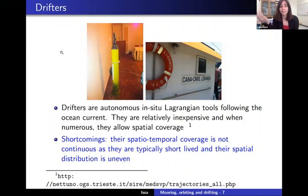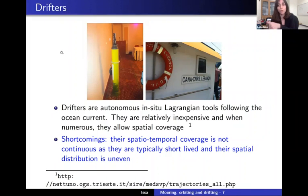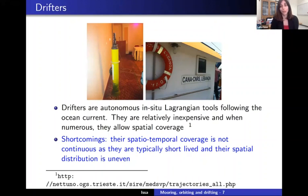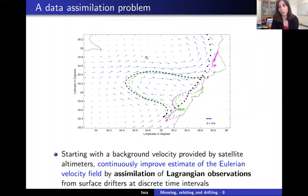On the other hand, there's another type of data that is more accurate: drifters, as I mentioned. Drifters are autonomous in situ Lagrangian tools — Lagrangian meaning they follow the current, wherever it goes. They communicate via satellite to report their position at every discrete time interval — for example, every six hours or every hour, depending on the program that launched them. They are relatively inexpensive — around 6,000 euros per drifter back in 2013. When numerous, they allow spatial coverage of the area of interest.